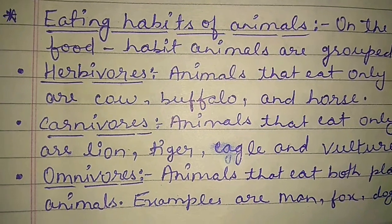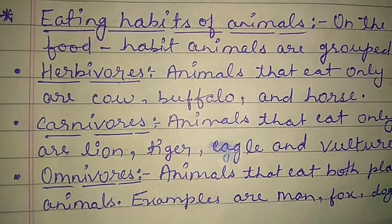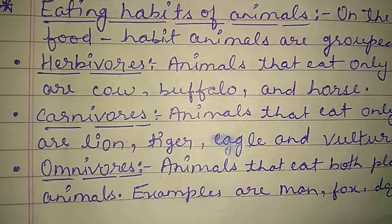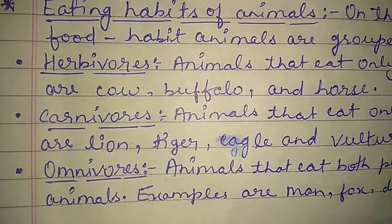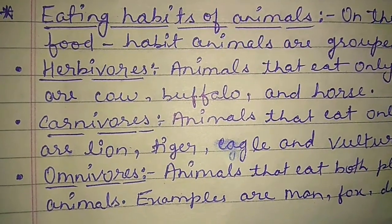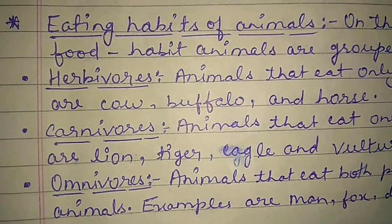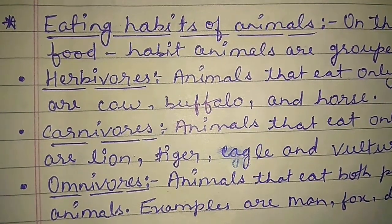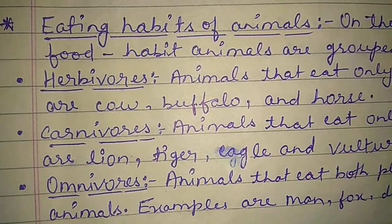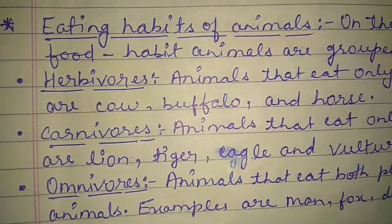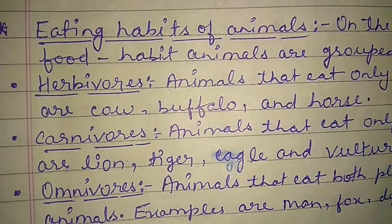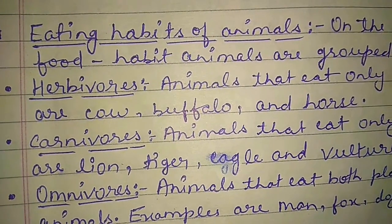Depending upon their food habits, animals are grouped as herbivores, carnivores, and omnivores. Herbivores are the animals which eat only plants, carnivores are the animals that eat only flesh, and omnivores are the animals which eat both plants and animals.